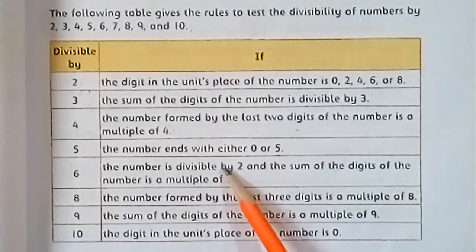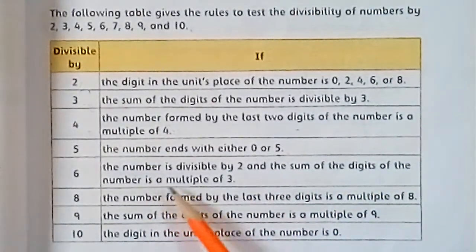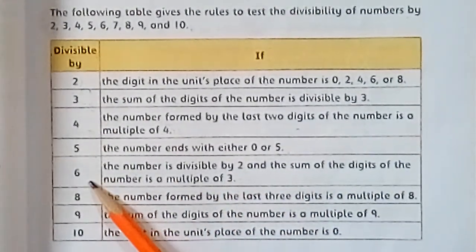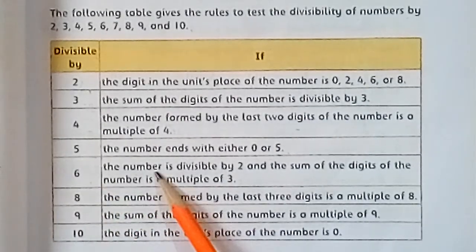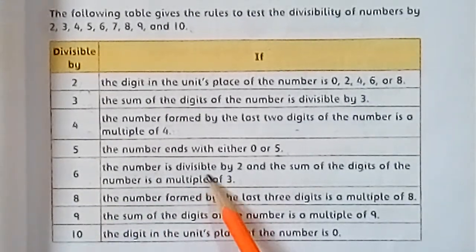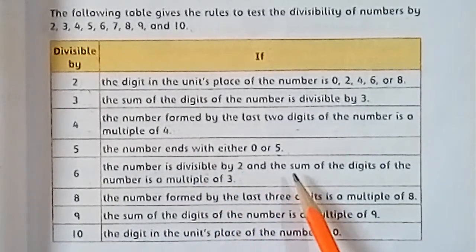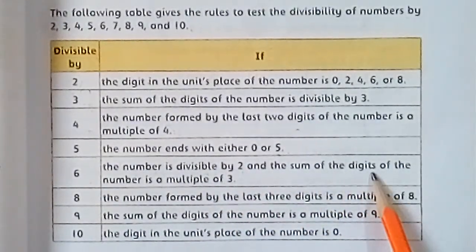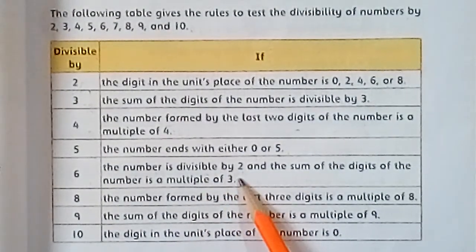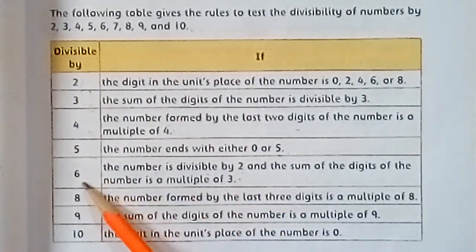The next one is divisible by 6. A number is divisible by 6 if the number is divisible by 2 and the sum of the digits of the number is a multiple of 3. If both conditions are met, we can say the original number is divisible by 6.